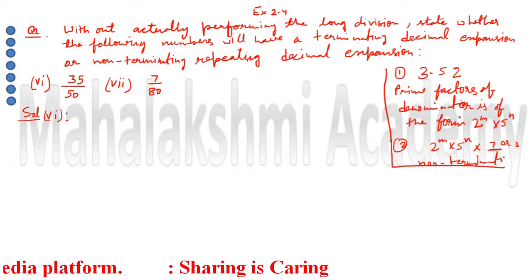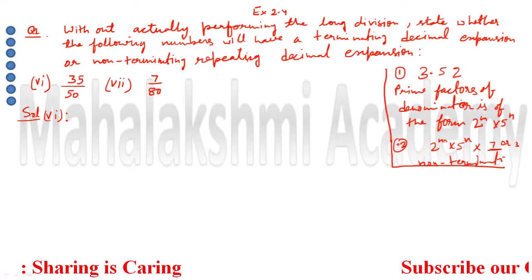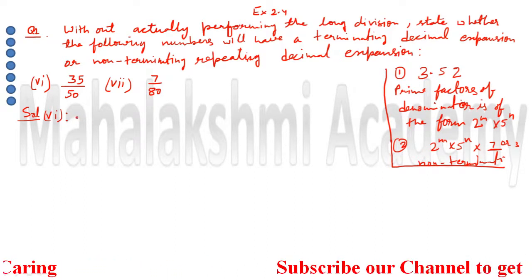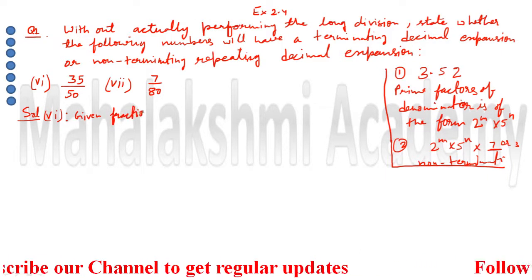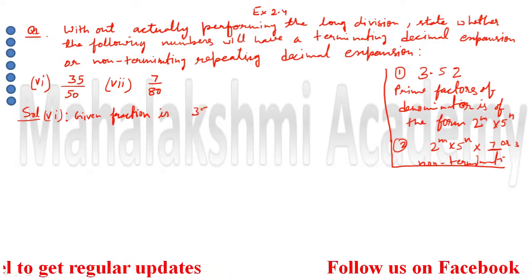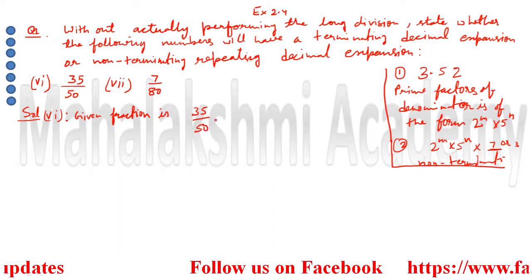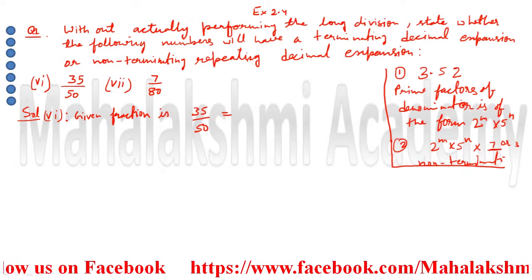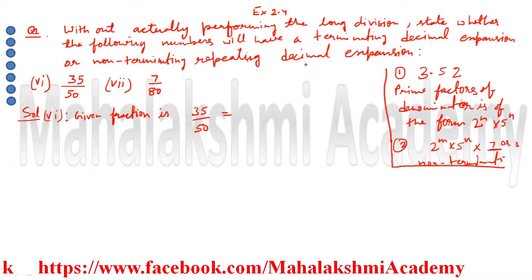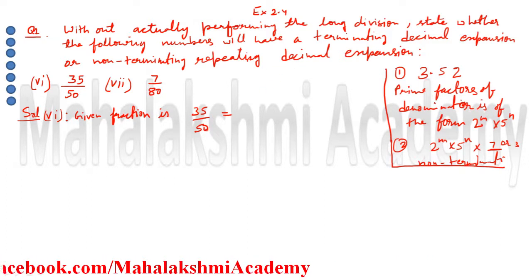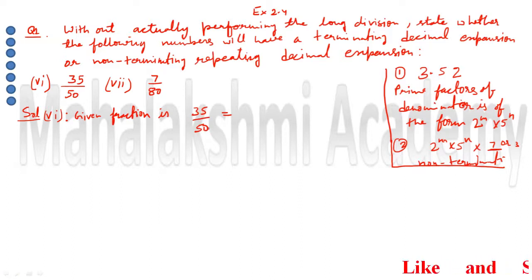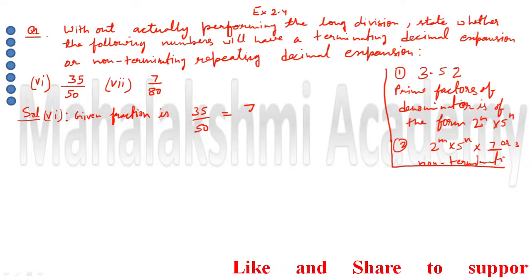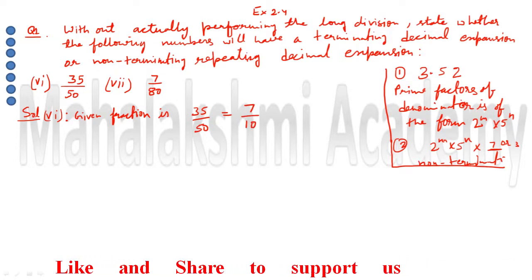So we have 2 formats. By keeping these 2 concepts in mind, we are going to solve the 6th part. The given fraction is 35 upon 50. As I mentioned in my previous video, whenever you get a fraction, the first step is to do the cancellation — if you can reduce the fraction, you should reduce it first. Since 35 and 50 are both divisible by 5, we cancel to get 7 upon 10.